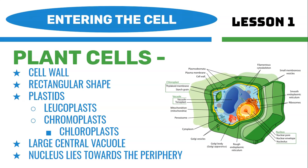In a plant cell, there is a large central vacuole which comprises nearly 50 to 90% of the total area of the cell — it's really big. Since the vacuole is so large, the nucleus just pushes all the other organelles out of the way, which is why the nucleus, the heart of the cell, is towards the periphery or the edge of the cell.